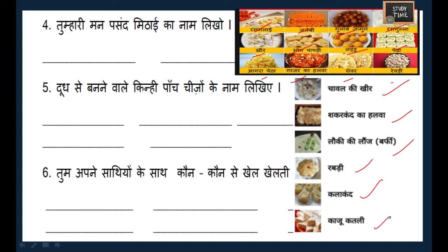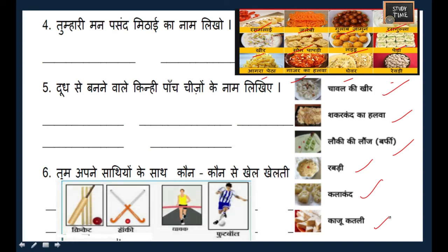The last question asks which games you play with your friends (tum apne saathi ke saath kaun se khel khelte ho). You can write cricket, hockey, football, or any other game you like to play with your friends.